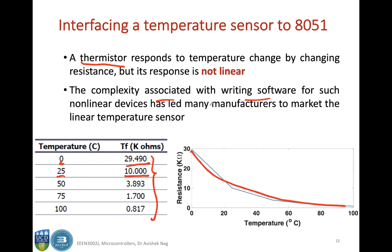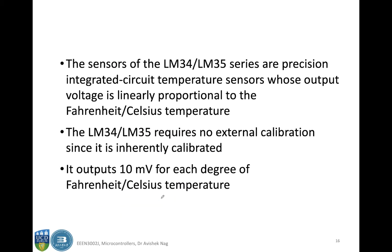The complexity associated with writing software for such non-linear devices has led many manufacturers to market linear temperature sensors, where the change in temperature and the change in output — which can be a resistance or a voltage — is linear. One such linear temperature sensor is the LM34 or LM35 series of precision ICs, which are temperature sensors whose output voltage is linearly proportional to the Fahrenheit or Celsius temperature. LM34/35 requires no external calibration since it is inherently calibrated and outputs 10 millivolts for each degree of temperature change.